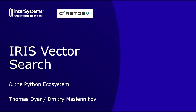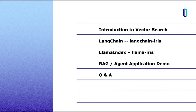What we're talking about is IRIS vector search. I'm going to go into a little bit of detail about the Python ecosystem that most people develop GenAI applications in, which makes it a very powerful set of capabilities that anybody can take advantage of and use their data in IRIS. The agenda covers vector search, Langchain and the Langchain IRIS adapter, Llama Index and Llama IRIS adapter, and a little application demo that Dimitri is going to show us.